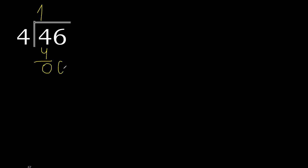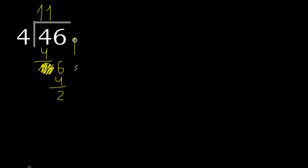Next, eliminate 0 on this side. Bring down 6. 4 multiplied by 2 is 8 — 8 is greater. Multiplied by 1 is 4. 6 minus 4 is 2. There is no more number, therefore complete.